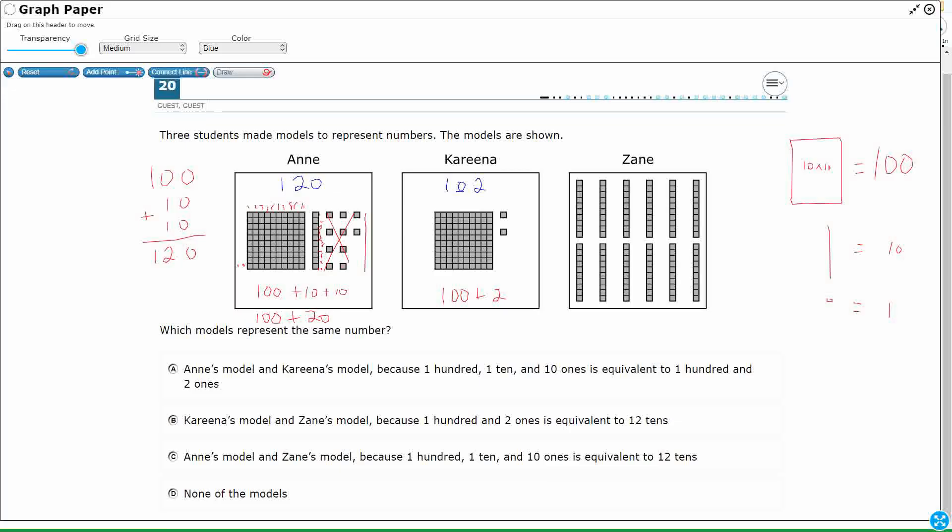So Zane is going to have to equal either 120 or 102. And I'm thinking it's going to be 120, because I don't see any ones. So let me see. I've got 10, 20, 30, 40, 50, 60, 70, 80, 90, 100.